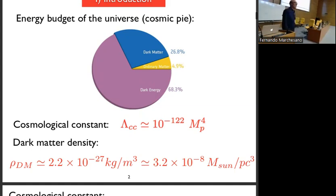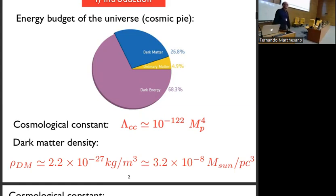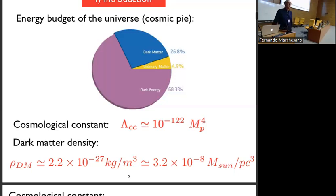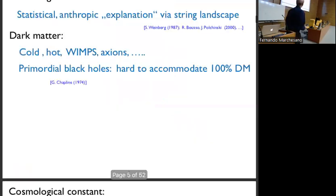About the smallness of the cosmological constant, which is, in Planck units, of the order of 10 to the minus 122. And then there's this other number that has to be explained, namely the dark matter density, which is per cubic meter roughly 10 to the minus 27 kilogram, or per megaparsec about 10 to the minus 8 solar masses. The question is: could there be any relation between these two numbers?